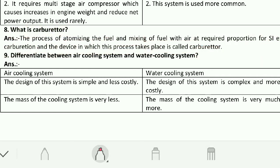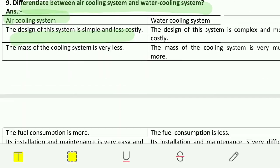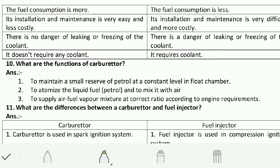Now the difference between air cooling system and water cooling system: In the air cooling system, the design is very simple and less costly, while the water cooling system is more costly. Fuel consumption is more in the air cooling system while it is less in the water cooling system. Installation and maintenance is easy and less costly for air cooling, while it is difficult and more costly for water cooling. There is no danger of leakage or freezing of coolant in air cooling; there is such a danger in water cooling. Air cooling does not require any coolant; water cooling requires coolant.